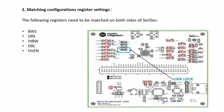If you are getting a valid pixel clock, then in order to make your data going out the same as data going in, below are the registers which need to be matched on both sides of the SerDes pair. Make sure that all other registers are set to their default positions.